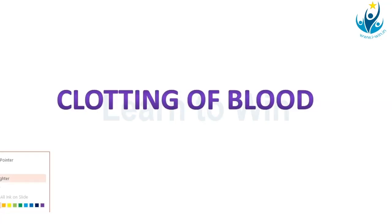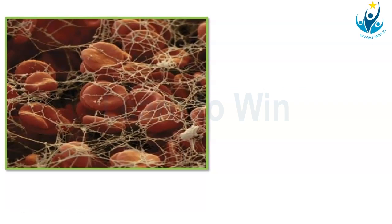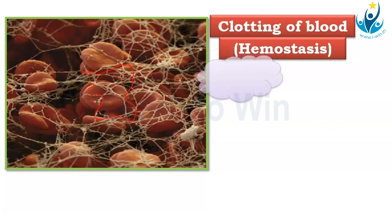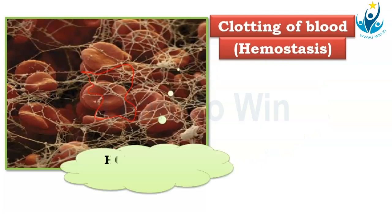We are going to understand the cascade called blood clotting. We'll talk about hemostasis or clotting of blood, which is an important topic when studying blood. Hemostasis comes from two words: hemo means blood and stasis means standing. Basically, hemostasis is a sequence of responses which finally results in the stoppage of bleeding — it prevents bleeding from further happening.